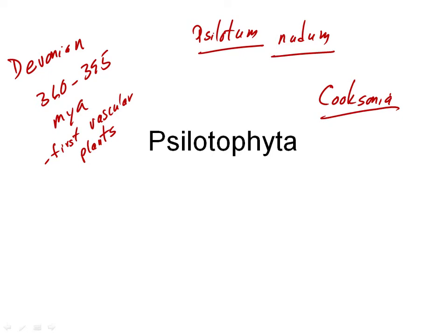There are actually two genera in this division. The one that we're going to focus on is Psilotum nudum. There is another genus, Tmesipteris, and this is one of the really weird pronunciations we have because it is not from a Western language — it's from the Malay language. The T is not pronounced in English: Tmesipteris. I'll show you a species of Tmesipteris at the very end; I've actually never even seen this plant myself, so it's not very well known.